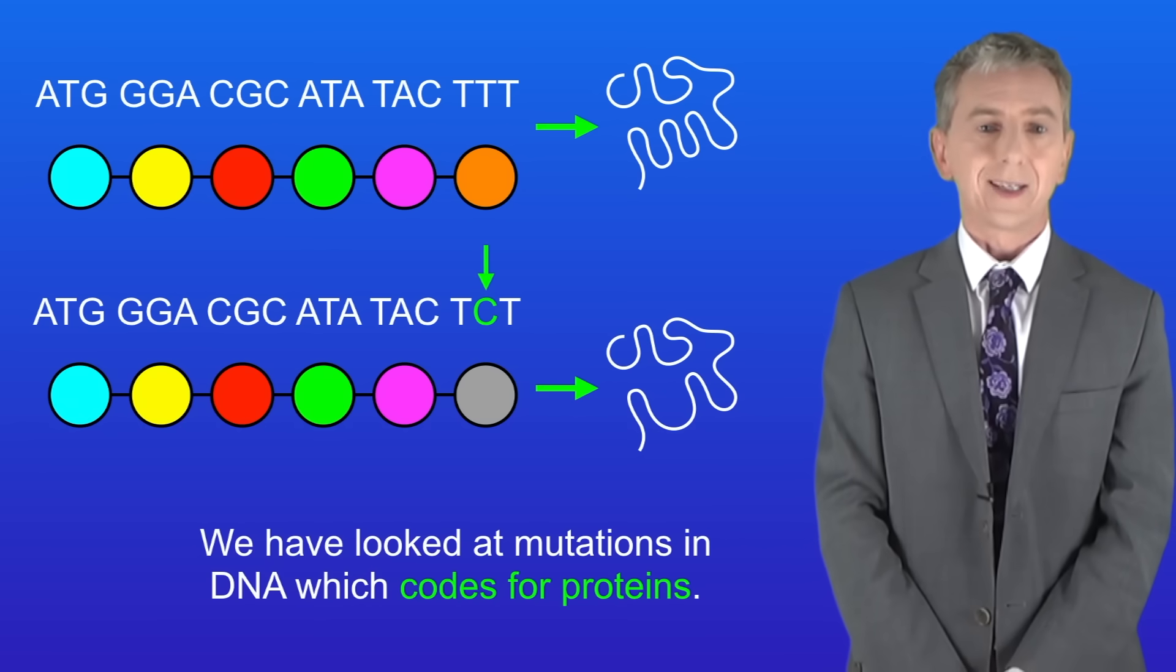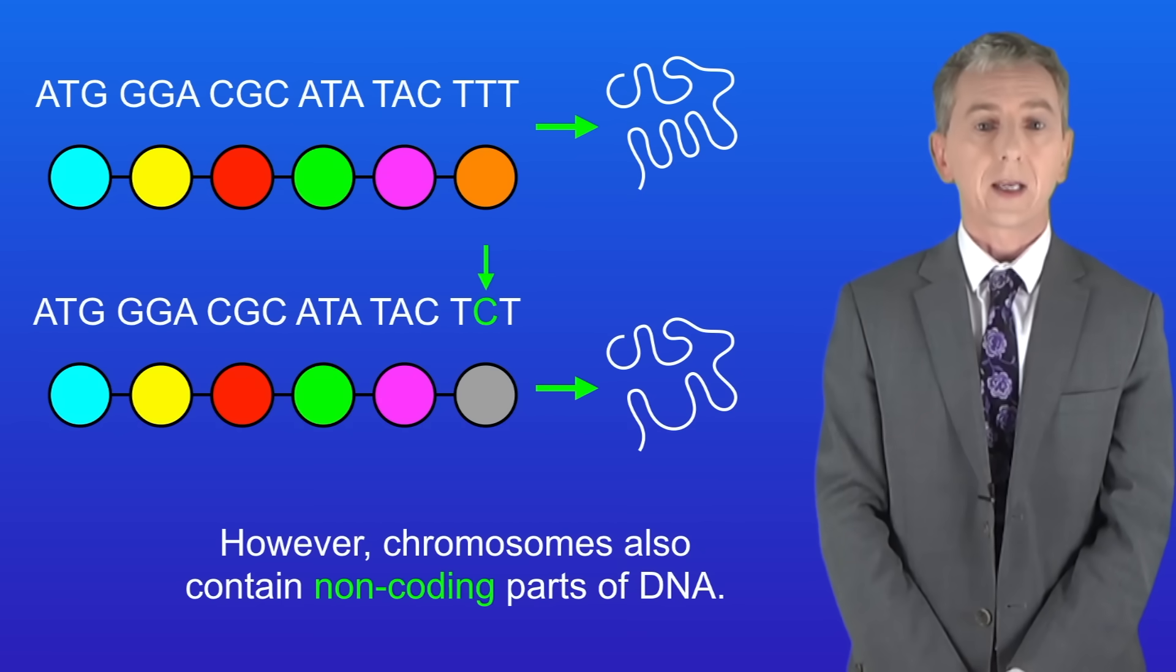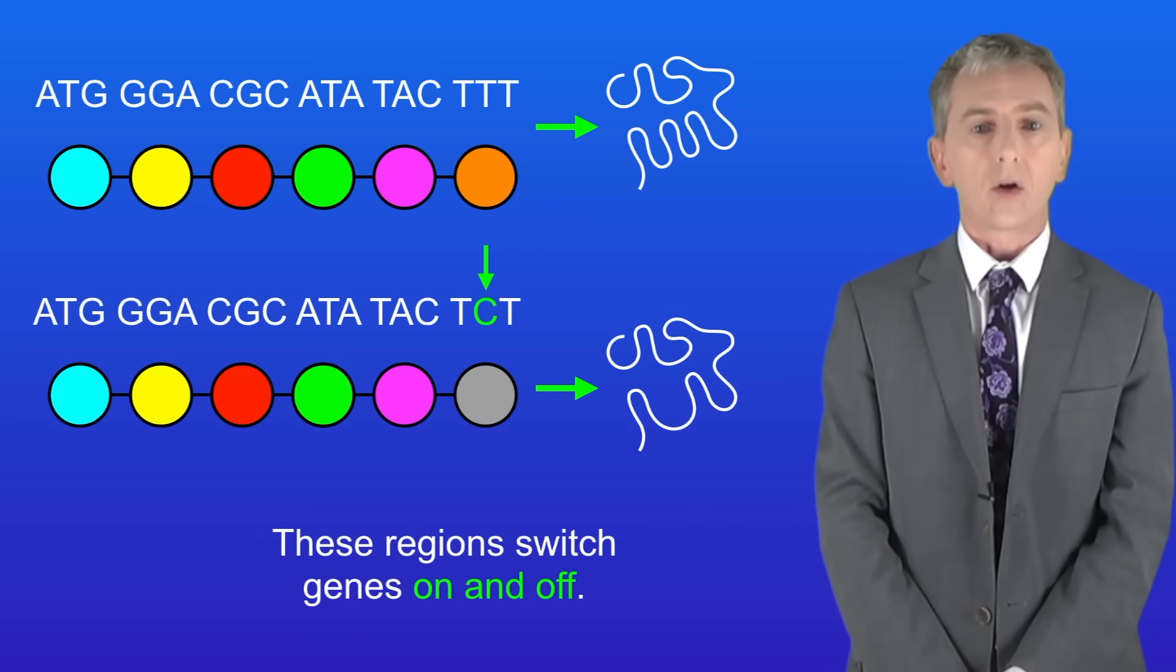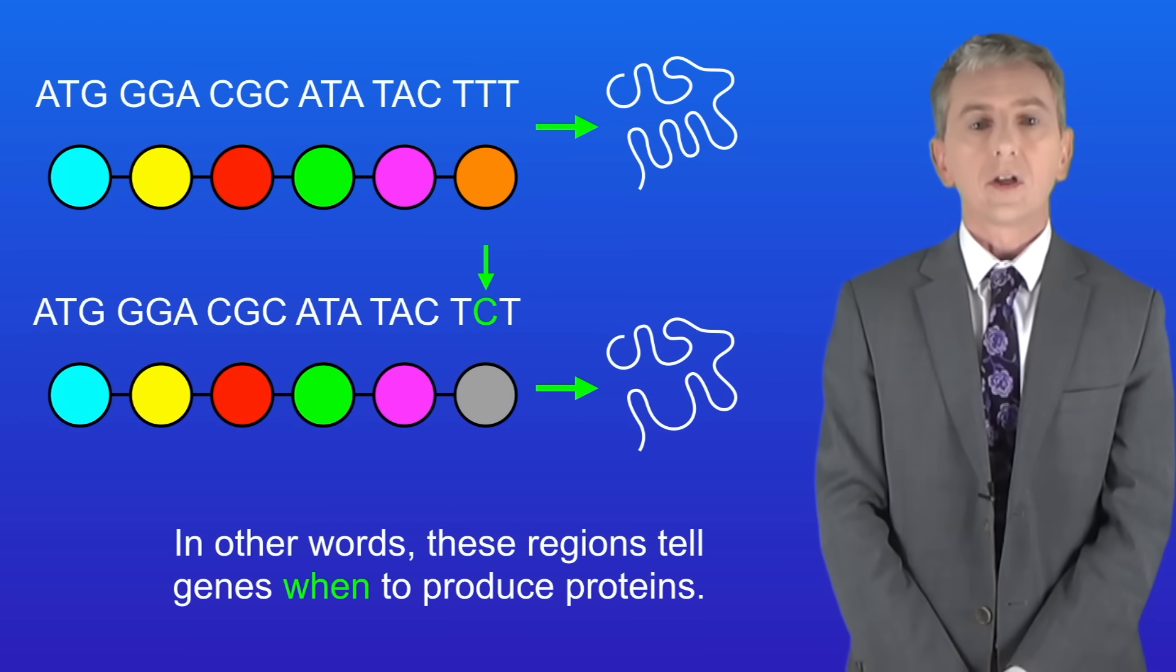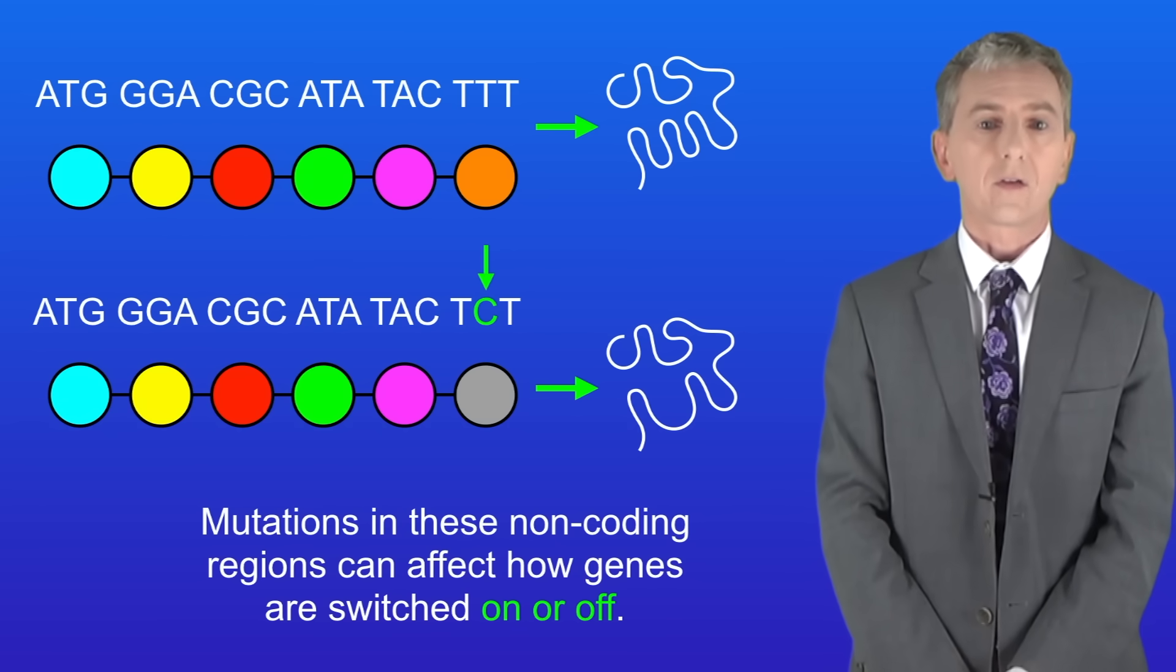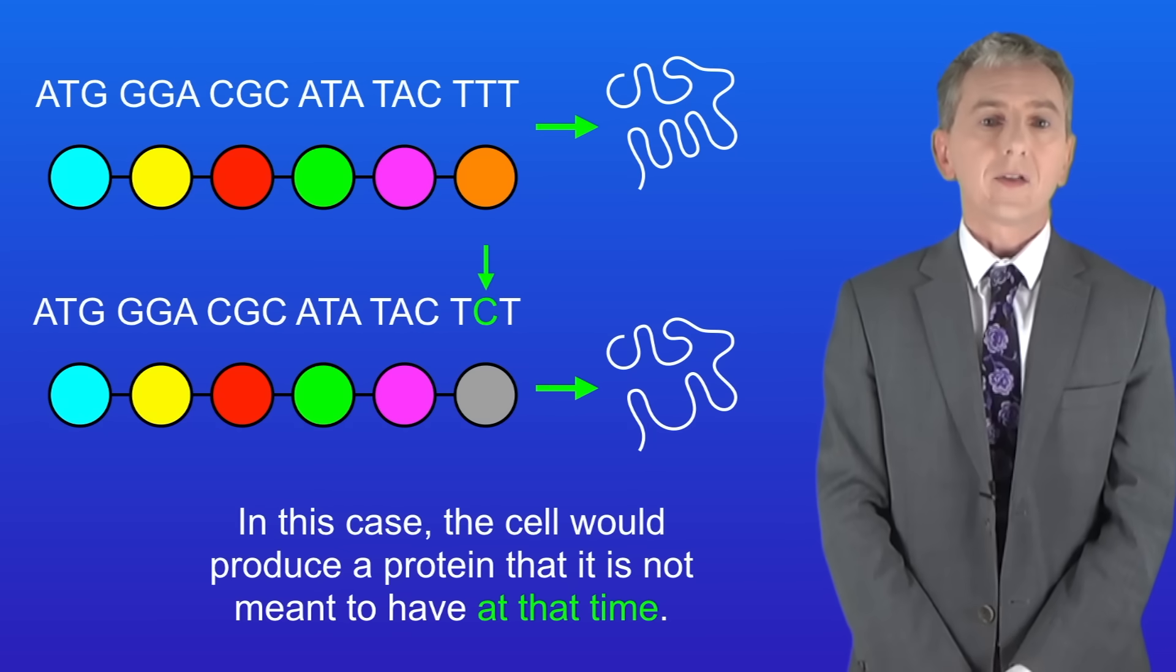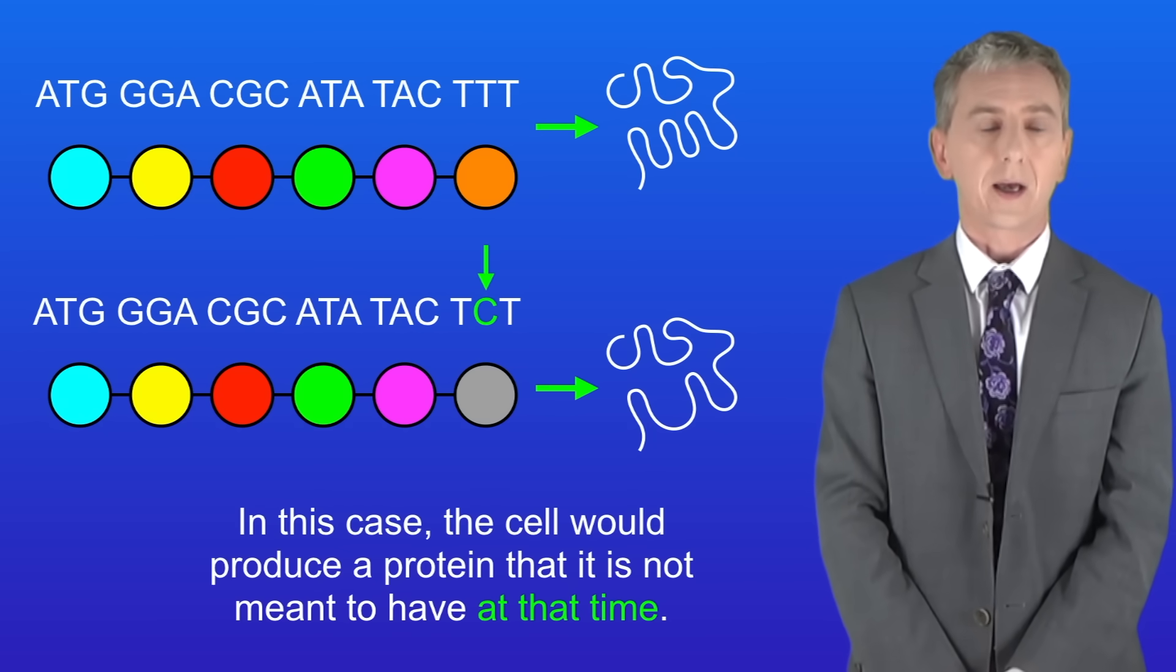So we've looked at mutations in DNA which codes for proteins. However, chromosomes also contain non-coding parts of DNA. These regions switch genes on and off. In other words, these regions tell genes when to produce proteins. Now mutations in these non-coding regions can affect how genes are switched on or off. For example, a gene may be turned on when it should be turned off. In this case the cell would produce a protein that it's not meant to have at that time.